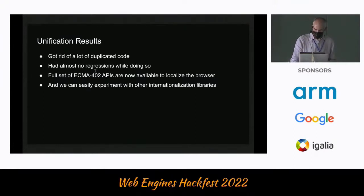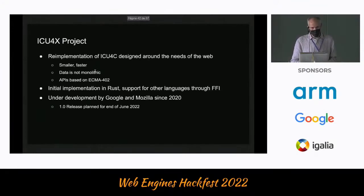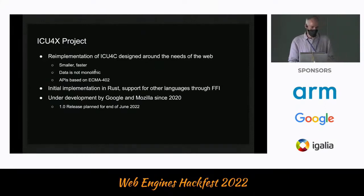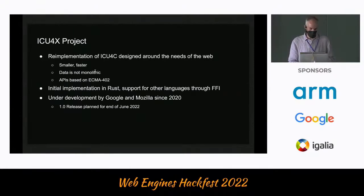So what other internationalization libraries? One we're interested in is called ICU4X. ICU4X is a re-implementation of ICU4C purposely designed around the needs of the web — it's smaller and faster. A lot of time has been spent making sure that data is easily separable and not monolithic, and the APIs are much more closely based on ECMA-402. The initial implementation is in Rust with support for other languages through an FFI. It's been under development mostly by Google and Mozilla since 2020, and the 1.0 release is planned for the end of this month.